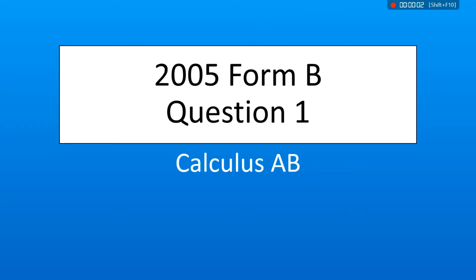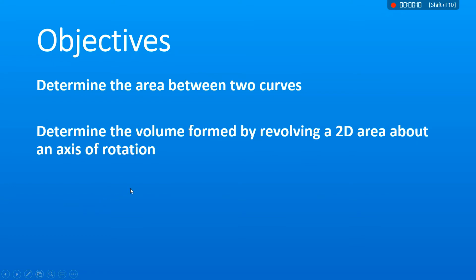All right, welcome back. So I'm going to be going through the 2005 Form B FRQs today, starting with the first one. We're going to be looking at area between two curves and then some volume by cross sections and disk method or shell method.